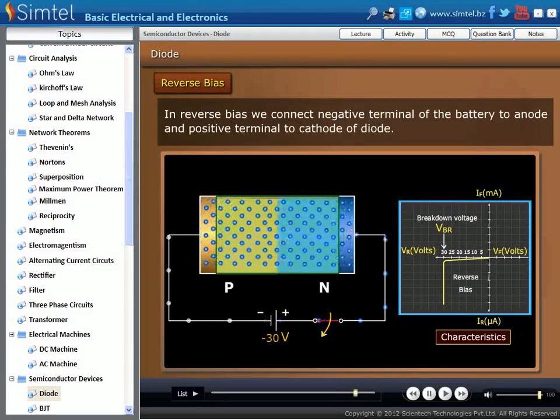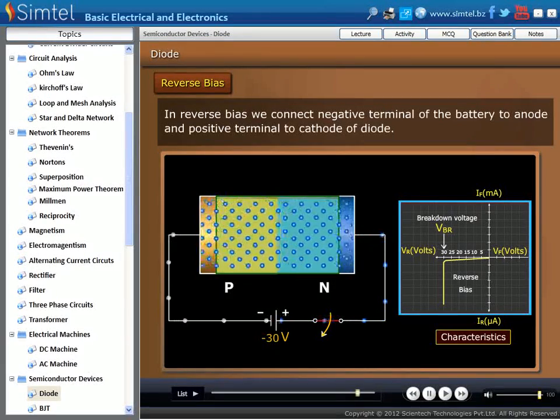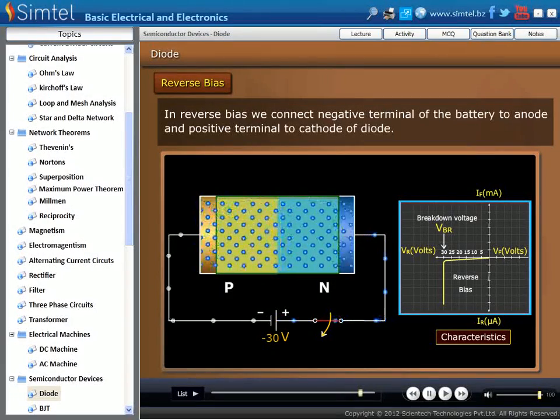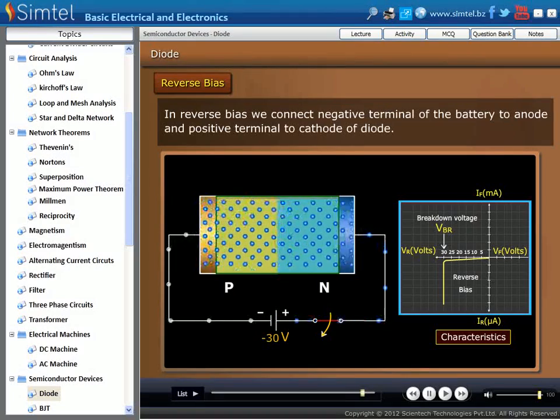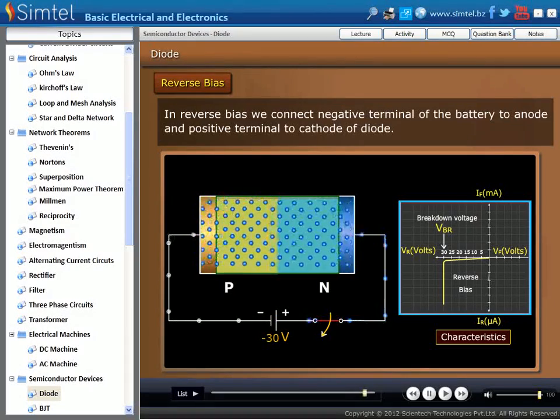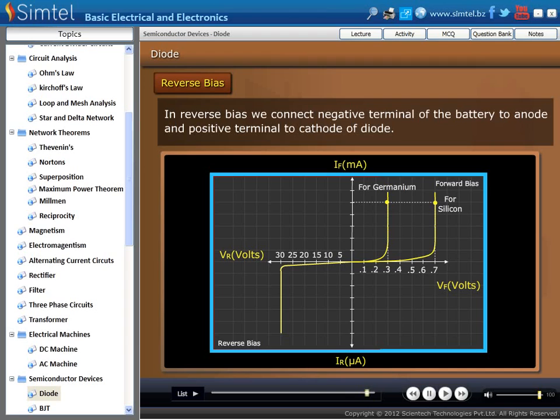At certain voltage level, such as minus 30 volt, a very small amount of current flows. Here we are showing the forward and reverse characteristics of P-N junction diode in a graph.